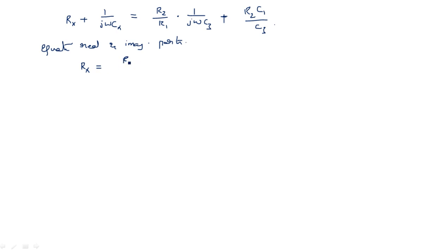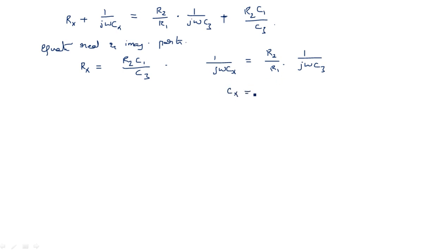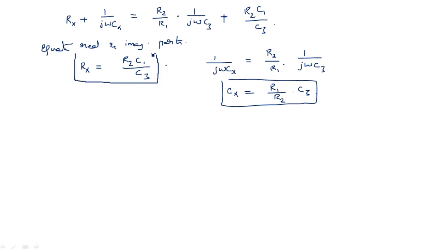Equating real and imaginary parts: the real part gives Rx = R2C1/C3, and from the imaginary part 1/(jωCx) = R2/(R1 · jωC3), so jω cancels and Cx = R1C3/R2. These are the unknown resistance and capacitance formulas for the Schering bridge.